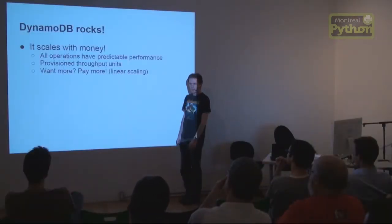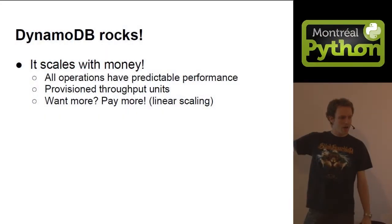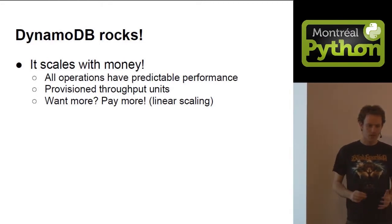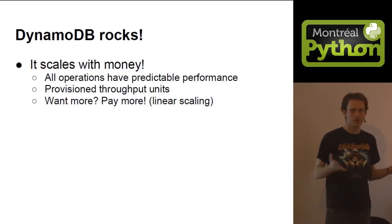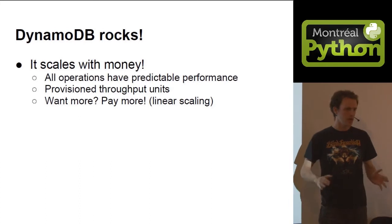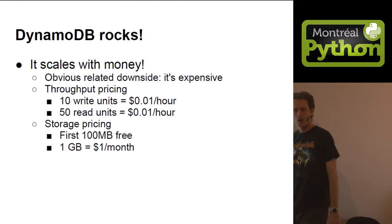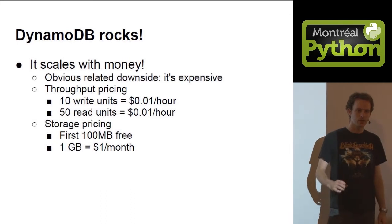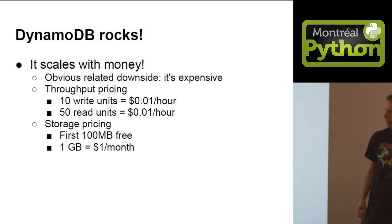The really good thing is that it scales with money, linearly. Every operation in DynamoDB has very predictable performance, rated in read or write units. You pay for those units plus the space used to store your data. It costs 10 write units or 50 read units for one cent per hour. You can get up to 10,000 read and write units per table, and possibly more if you ask Amazon.